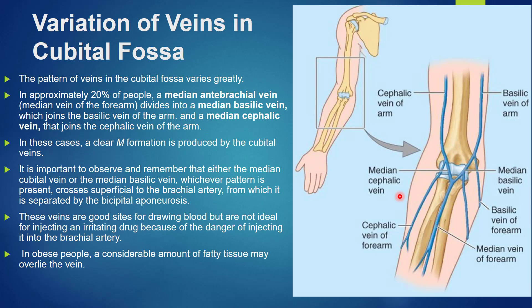There can be variation of the veins in the cubital fossa. In approximately 20% of people, the median antebrachial vein — that is, the median vein of the forearm — divides into the median basilic vein, which joins the basilic vein of the arm, and the median cephalic vein, which joins the cephalic vein of the arm. In these cases, a clear M-formation is produced by the cubital veins.